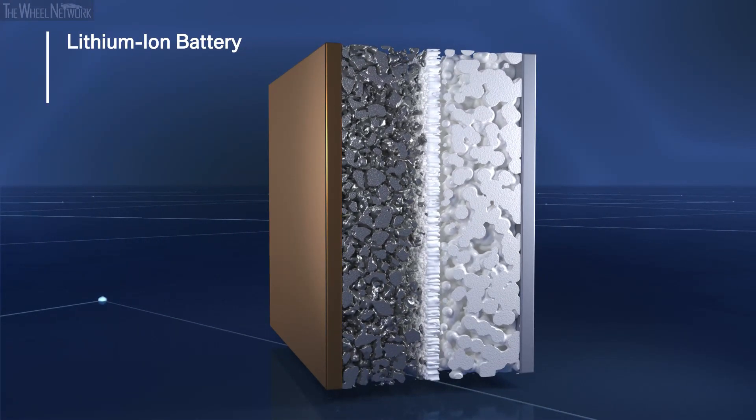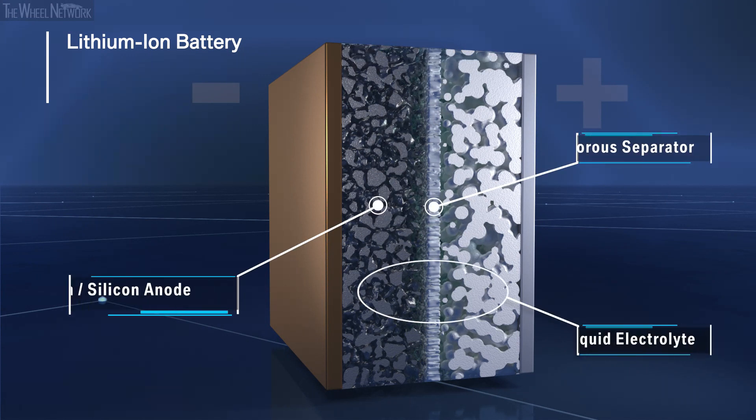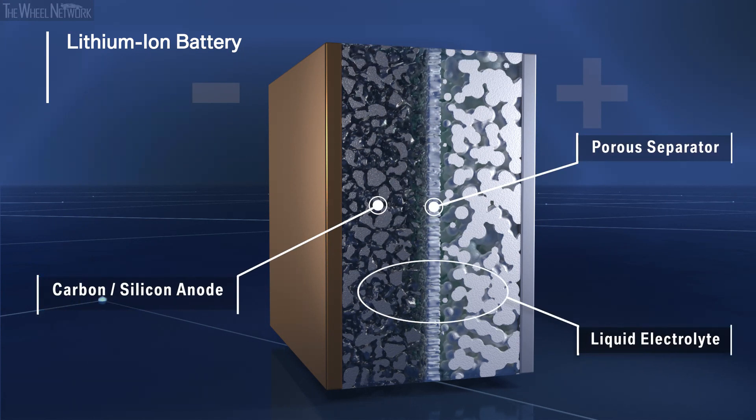Today's batteries are based on lithium-ion technology composed of two electrodes: cathode, anode, and a porous separator. A liquid electrolyte allows the lithium-ion transfer and thus the flow of current.